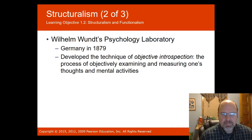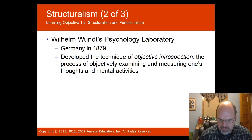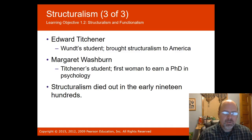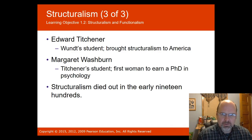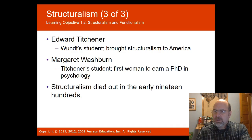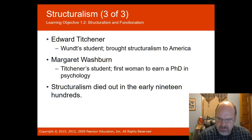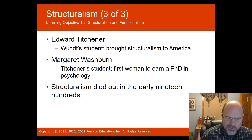William Wundt established a laboratory in Germany in 1879 and is considered the father of psychology. He was a physiologist who developed a technique of objective introspection — objectively examining and measuring one's thoughts and mental activities. Edward Titchener was a student of Wundt and brought structuralism to America. He noted that not only physical sensations but also thoughts can be examined. Margaret Washburn, a student of Titchener, was the first woman to earn a PhD in psychology and published a book on the animal mind in 1908. Structuralism died out in the early 1900s.